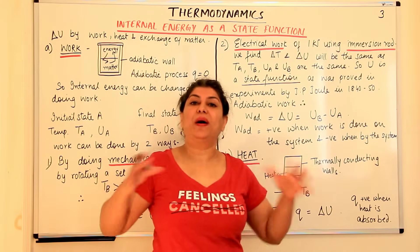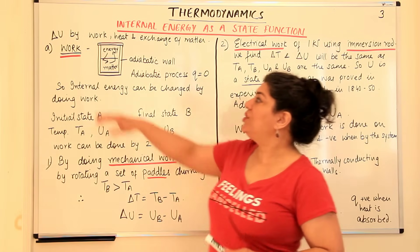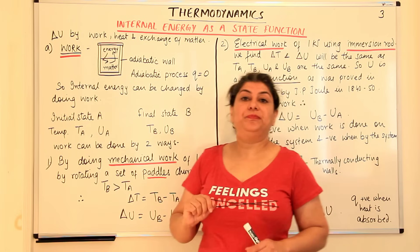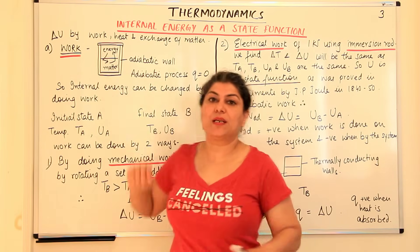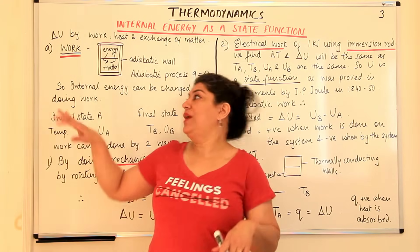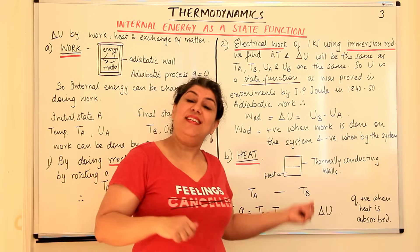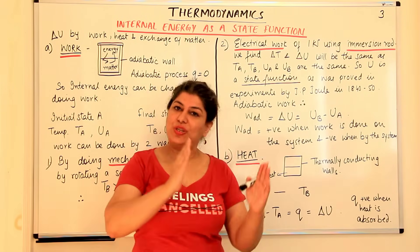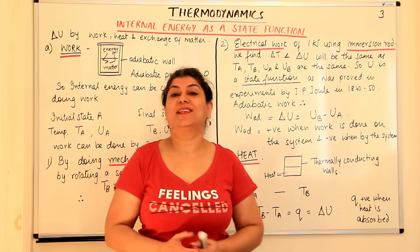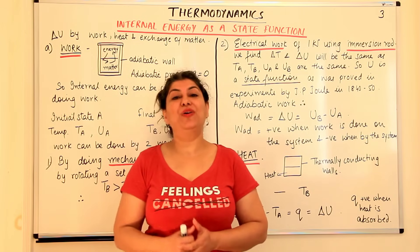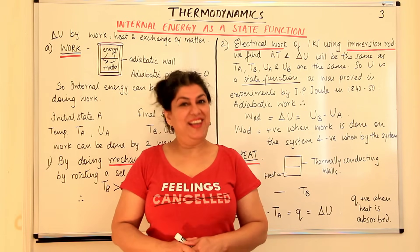So this was how we can bring about changes in delta U by using work and heat. In the next video I'll tell you how it actually happens in normal life, where we may use both work and heat simultaneously — not just adiabatic walls or just thermally conducting walls. We'll look at how both effects combine to cause the change in internal energy. If you found this video helpful, please give it a thumbs up, subscribe to my channel, recommend it to your friends, and keep returning for more chemistry videos. Thank you for watching — bye bye for now.